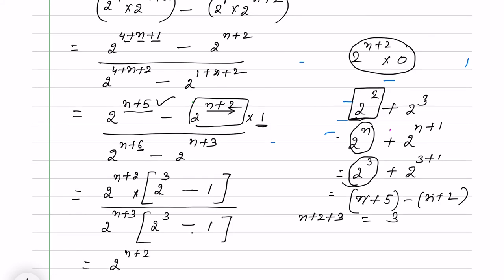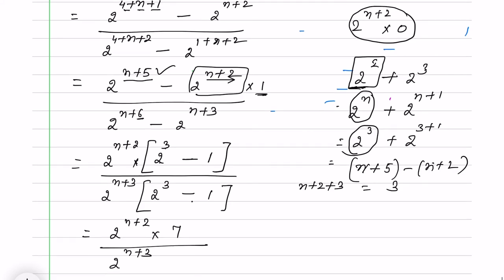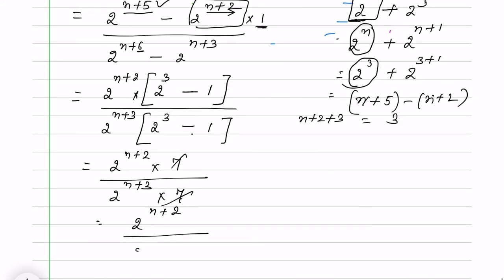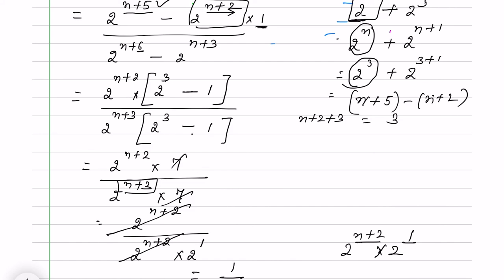Now I simplify: 2 cubed is 8, so 8 minus 1 equals 7. I have 2^(n+3) times 7 in the numerator. Now, I can write 2^(n+2) as 2^(n+2) times 2^1, because adding powers gives n+3, which matches the denominator. So I can cancel 2^(n+2), and what is left is 1 over 2. This will be the answer.